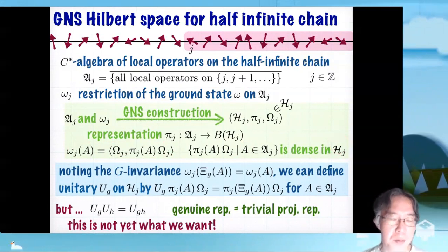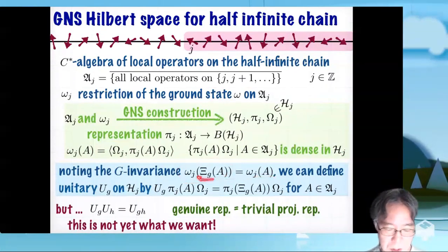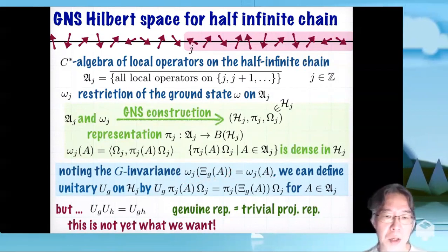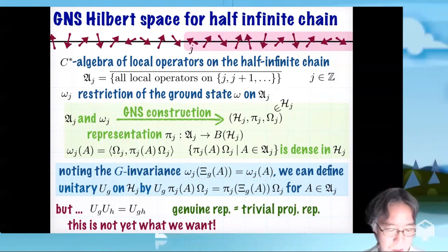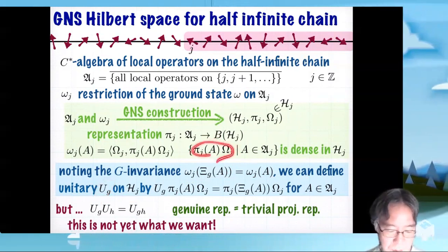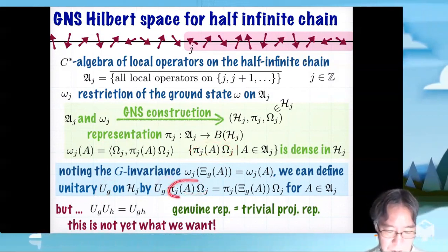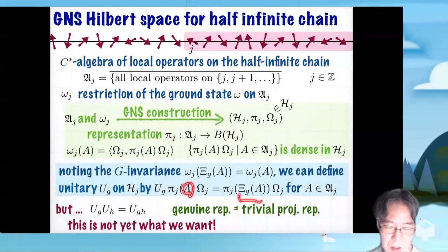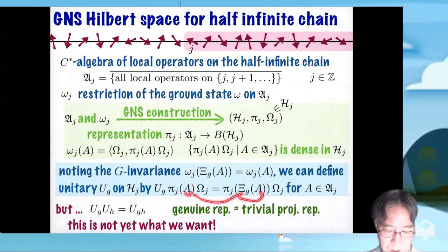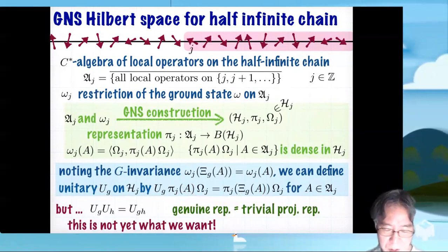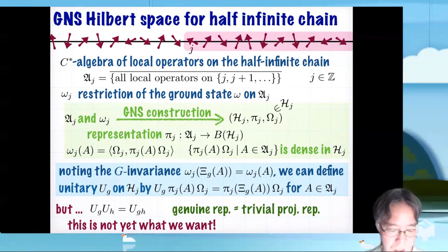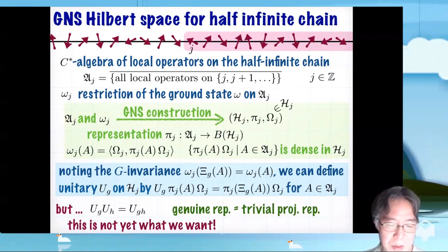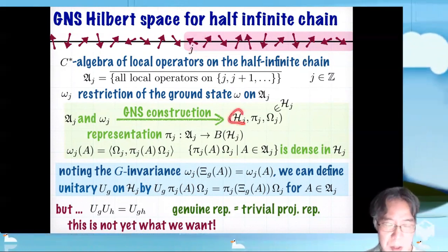With this setting, by noting that the ground state is G invariant - we recall that this is a standard quantum mechanical transformation of the operator A, and since ω is declared to be G invariant, we have this identity. By using this, we can define using standard machinery in C* algebra unitary operator Uₐ on ℋⱼ. This is the definition: you pick a vector of this form, and then when you act on this vector, it changes into this. A tends to xyₐA, so this is a standard quantum mechanical transformation. By using the fact that this form is dense in ℋⱼ and using this invariance, you can show that this Uₐ can be extended to a unitary operator on ℋⱼ. So we started from ground state restricted on the half infinite chain and constructed a Hilbert space and also unitary operators.